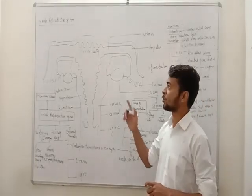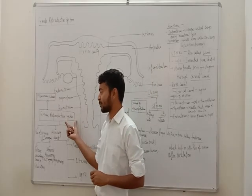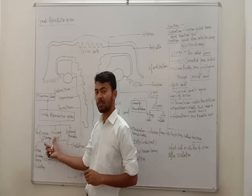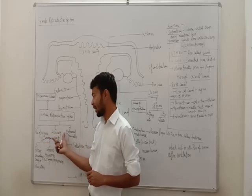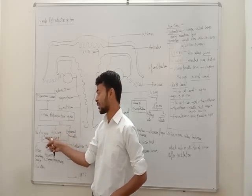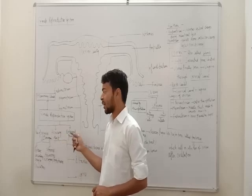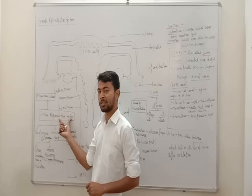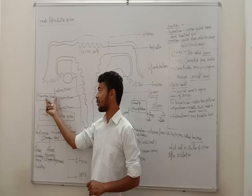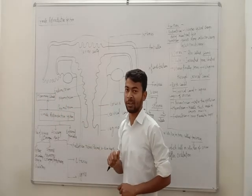Hello students, today we are going to discuss about the female reproductive system. The female reproductive system consists of a pair of ovaries, which are primary sex organs, female sex organs, and accessory ducts and external genitalia. The functioning of the female reproductive system is correlated with the development of the mammary gland, for different processes like ovulation, fertilization, pregnancy and childcare.